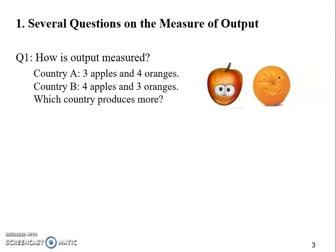Some of you, I would guess, might want to add up the number of apples and number of oranges. You would like to say that both countries produce seven units of fruits, for example. It might be okay if we're looking at apples and oranges. What if we're talking about airplanes and oranges? In other words, A produces three airplanes and four oranges, B four airplanes and three oranges. Are you still going to add up the number of airplanes to the number of oranges? Definitely not, right? It doesn't make sense.